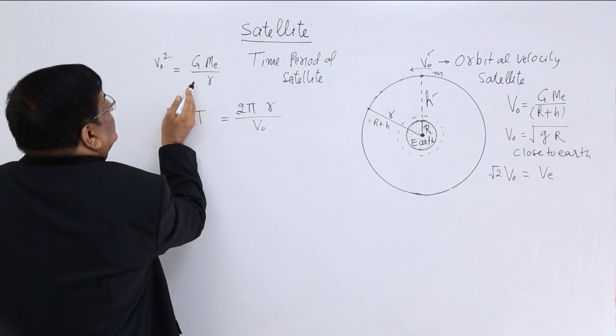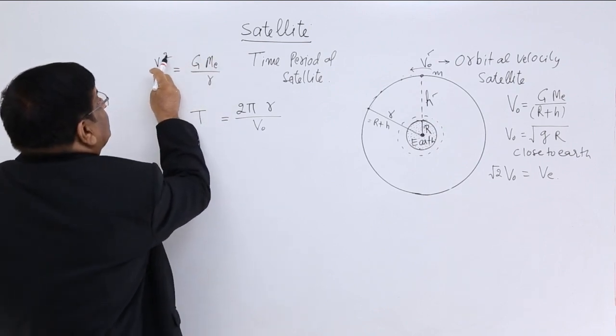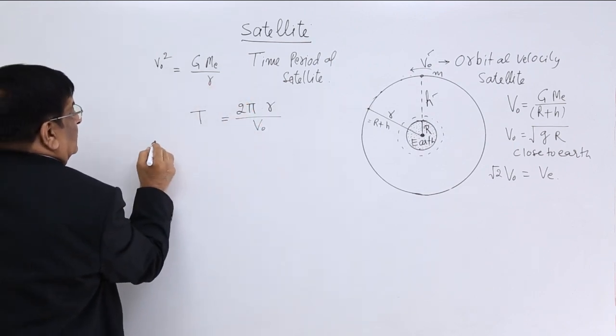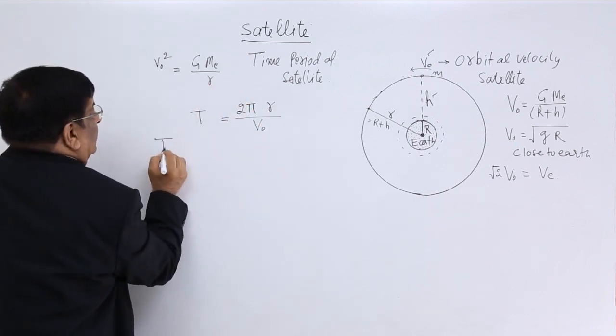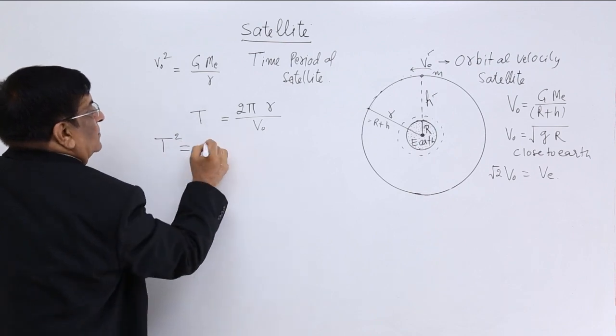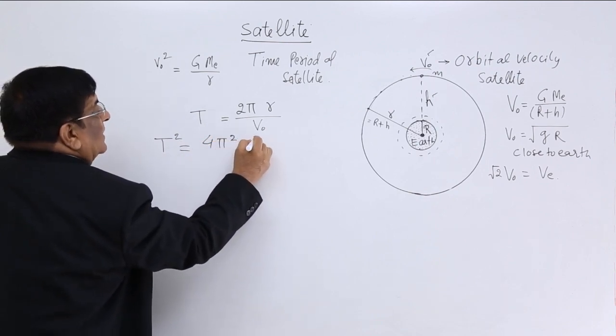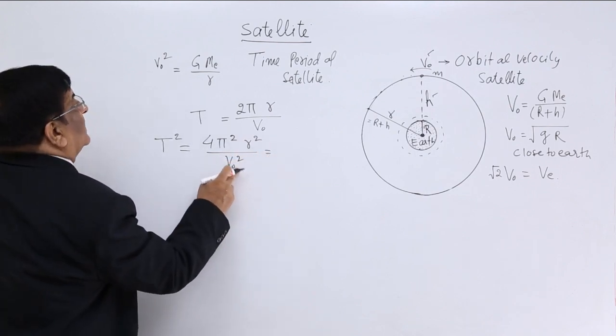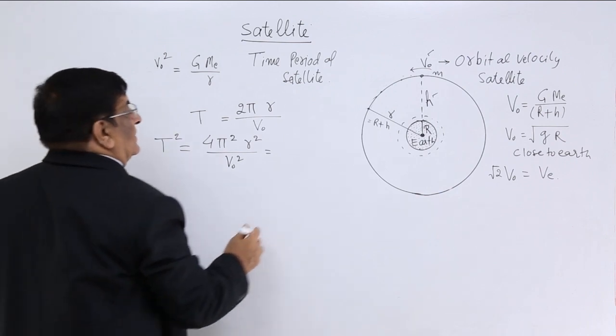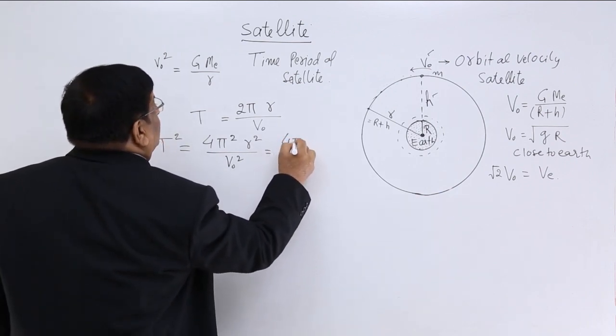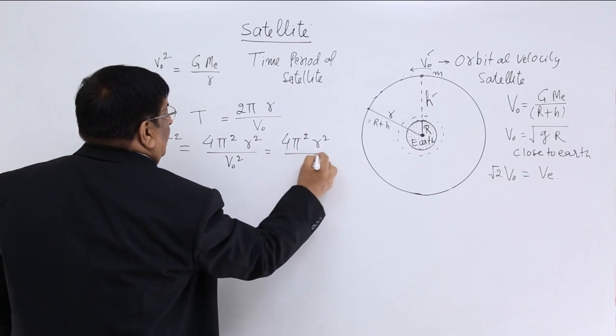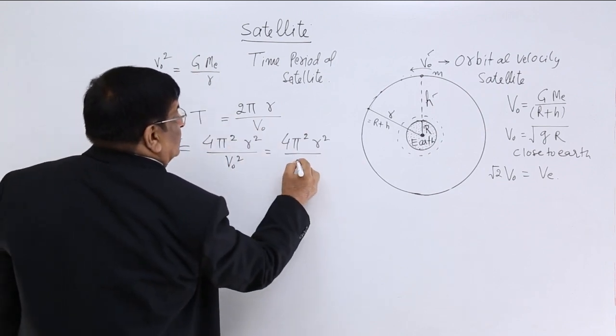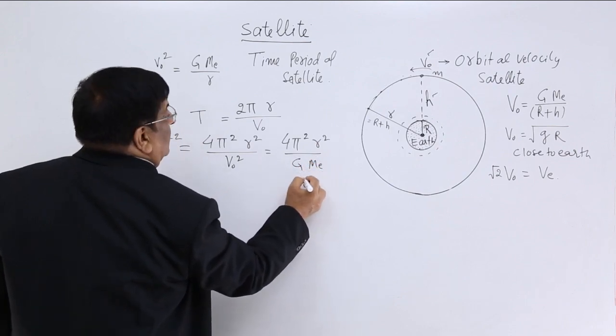v0, we know the formula here, v0 square. So let's make it square everything. So this is t square is equal to 4 pi square r square upon v orbital square. v orbital square is equal to this. So let's put it here,